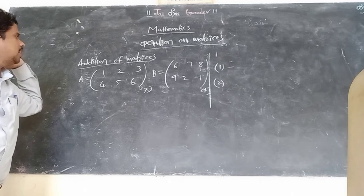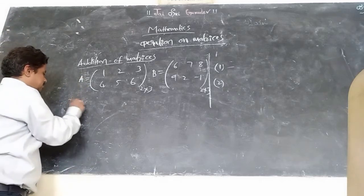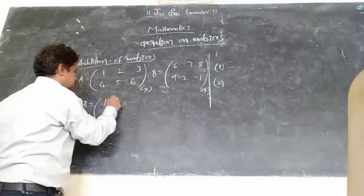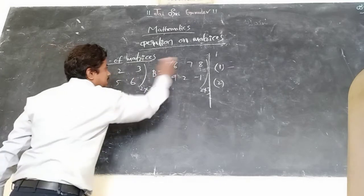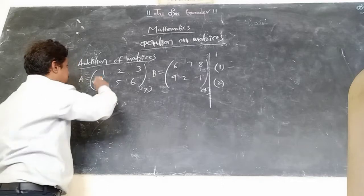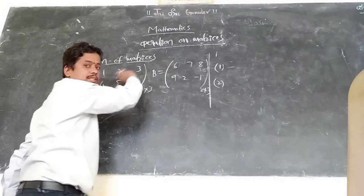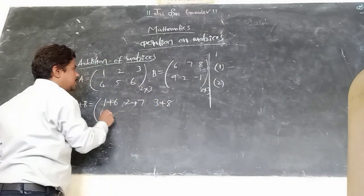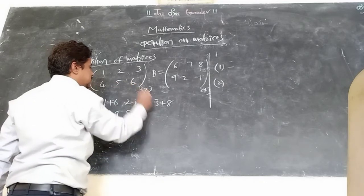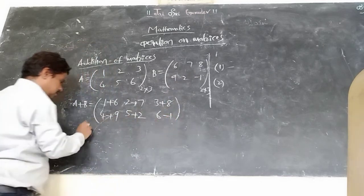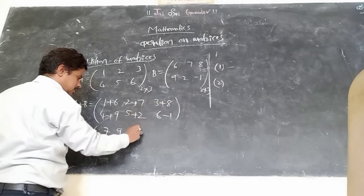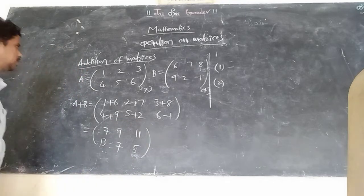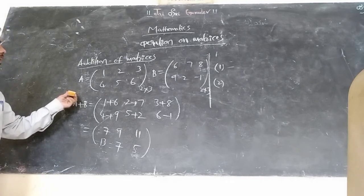We can do the addition of the two matrices. A plus B — corresponding elements should be added. So 1+6, 2+7, 3+8; 4+9, 5+2, 6+(-1). The answer is [7, 9, 11; 13, 7, 5]. This is how addition of two matrices works — only when the orders are the same can we proceed.